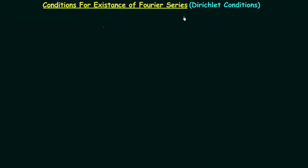In the last lecture we completed the introduction of Fourier series expansion. I explained what is Fourier series, why we use it, and the different types of Fourier series expansion. We use Fourier series for the analysis of periodic signals, and Fourier transform for non-periodic signals. There are conditions for both — today we will discuss the conditions for the existence of Fourier series.